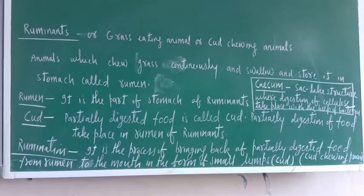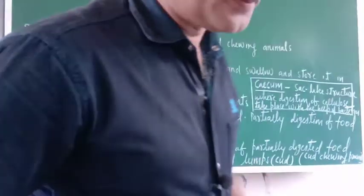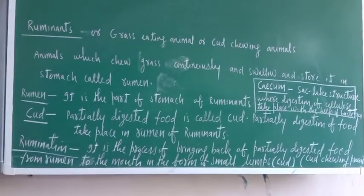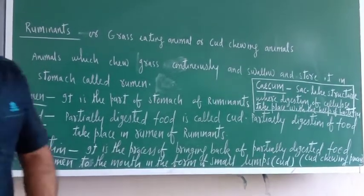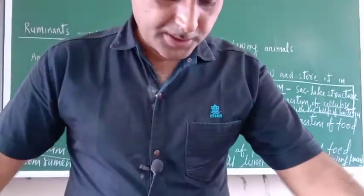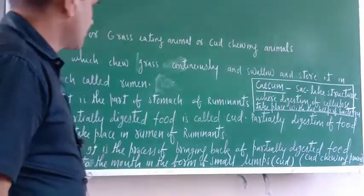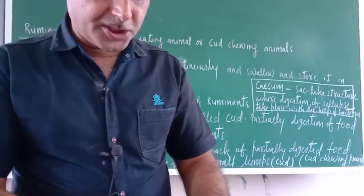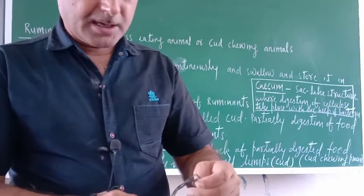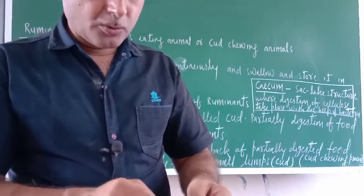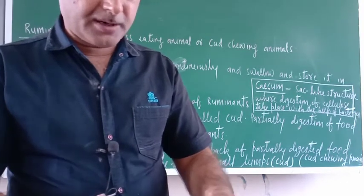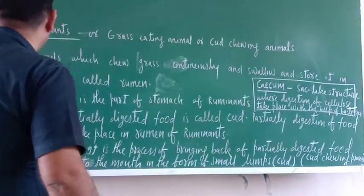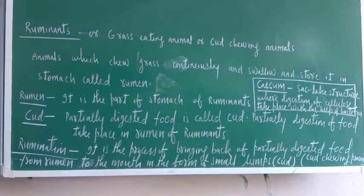Good morning dear cadets. As you know, we are in the grass-eating animals topic. Yesterday I taught you so many things about ruminants, meaning the animals which eat grasses only. So now try to understand some of the processes and how the alimentary canal of a grass-eating animal is different from the human alimentary canal. Some theoretical aspects of that topic will be covered here.